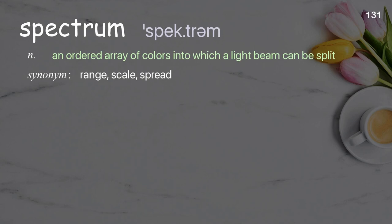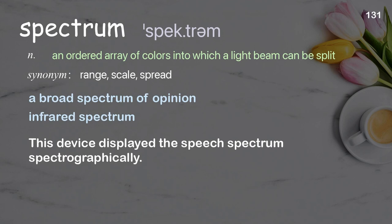Spectrum: An ordered array of colors into which a light beam can be split. Examples: a broad spectrum of opinion, infrared spectrum. This device displayed the speech spectrum spectrographically.